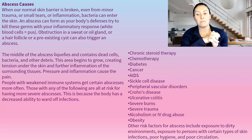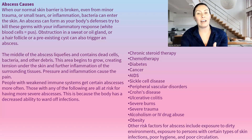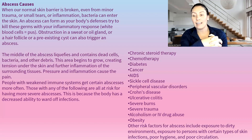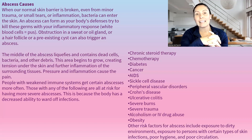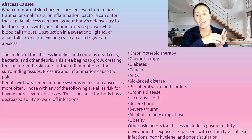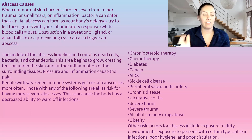People with a weakened immune system get certain abscesses more often. Those with any of the following conditions are at higher risk of severe abscess: chronic steroid therapy, chemotherapy, diabetes, cancer, AIDS, sickle cell disease, peripheral vascular disease, Crohn's disease, ulcerative colitis, burns, trauma, alcoholism, IV drug abuse, and obesity — really anything that's weakening your immune system. Exposure to a dirty environment, poor hygiene, and poor circulation all contribute to the increased risk of an abscess.